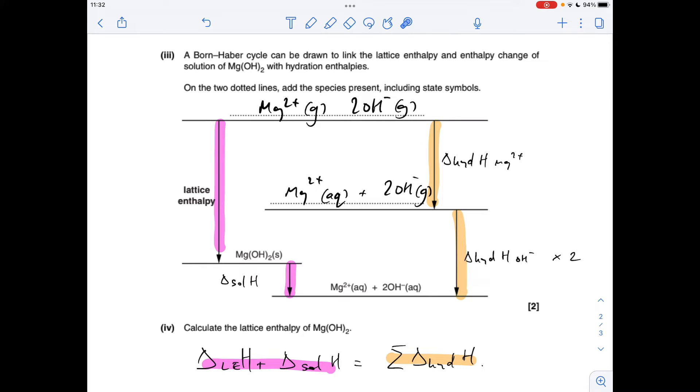Moving on to the calculation now. So you can see I've added the names of the enthalpy changes at play, and a reminder that this one here, the hydration enthalpy for the hydroxide ion, needs to be doubled because you've got two moles in your cycle.